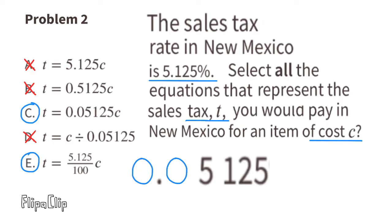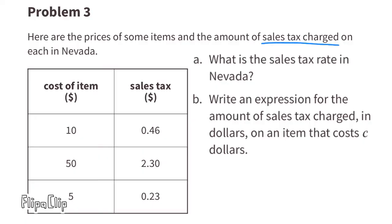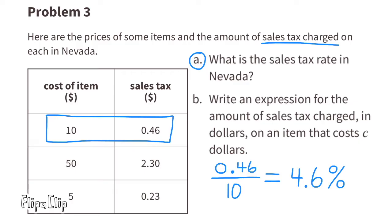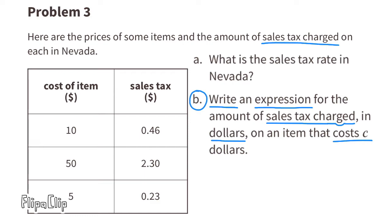Problem 3: Here are the prices of some items and the amount of sales tax charged on each in Nevada. Part A: What is the sales tax rate in Nevada? We determine the rate by dividing the sales tax by the cost: $0.46 divided by $10 equals 0.046. Converting to a percentage gives a sales tax rate of 4.6% in Nevada.